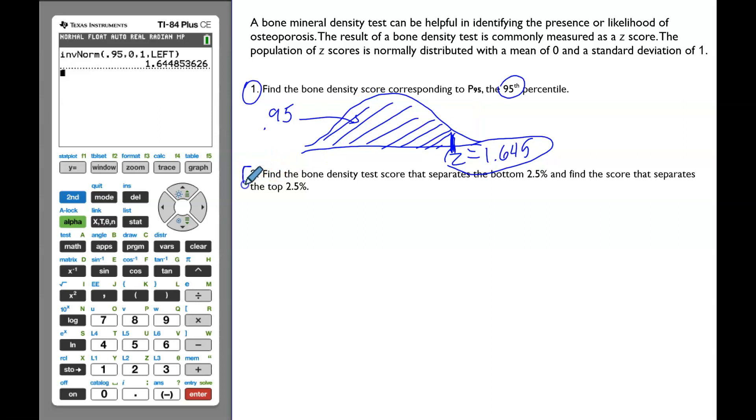Now, let's read part 2. Find the bone density test score that separates the bottom 2.5% and find the score that separates the top 2.5%. In the diagram, we can see that 2.5% is a very, very small area on the left, 0.025 as a decimal.